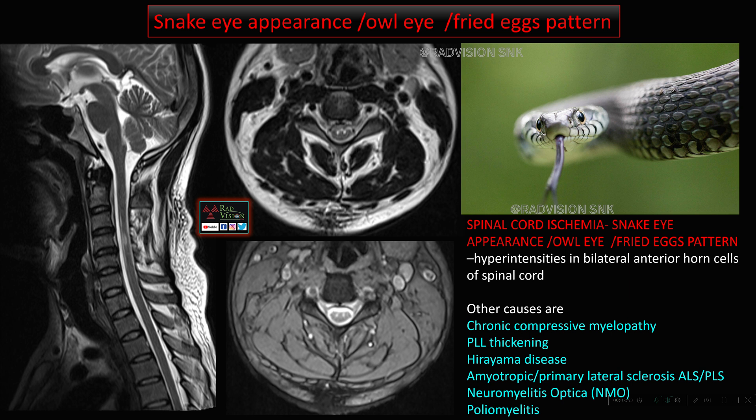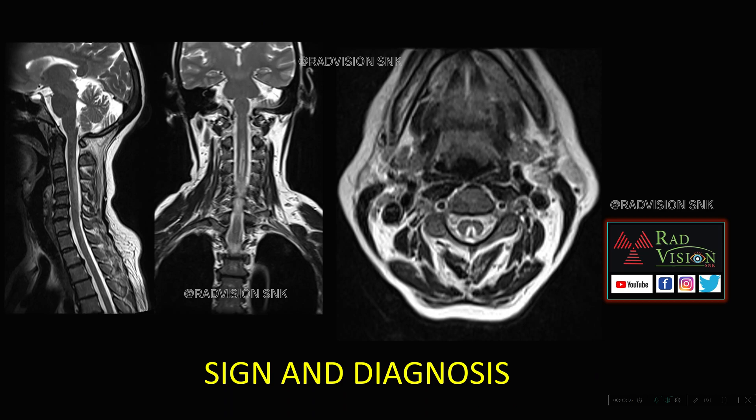This pattern represents hyperintensity in bilateral anterior horn cells of the spinal cord, commonly seen in spinal cord ischemia. Other causes include chronic compressive myelopathy, PLL thickening, Hirayama disease, amyotrophic lateral sclerosis, primary lateral sclerosis, neuromyelitis optica, and poliomyelitis. Remember that snake eye appearance is most commonly associated with spinal cord ischemia.